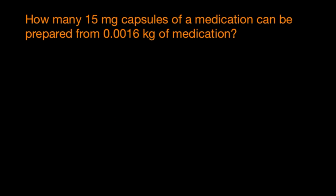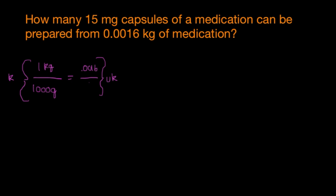The next problem is going to take a little longer because it requires more steps. The question says: how many 15 milligram capsules of a medication can be prepared from 0.0016 kilograms of medication? The first fraction we are going to set up is to convert kilograms to milligrams. For our known, we know that 1 kilogram equals 1,000 grams. Our unknown is the 0.0016 kilograms, and we want to know how many grams that is. When we cross multiply and divide, x gives us 1.6 grams. But that is not it — we now need to take the grams and convert to milligrams so we are dealing with the same units.